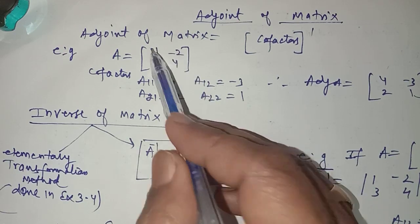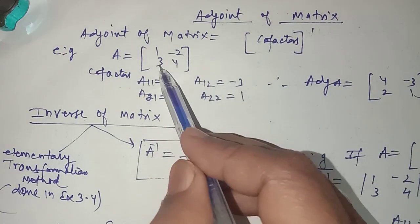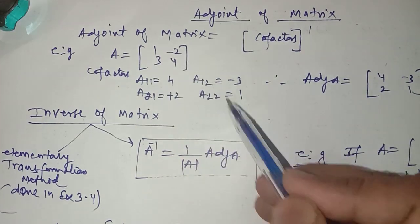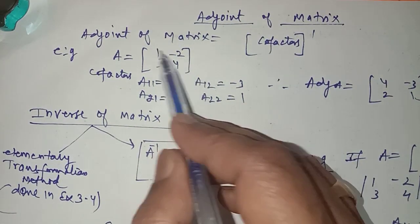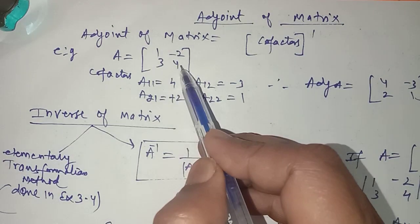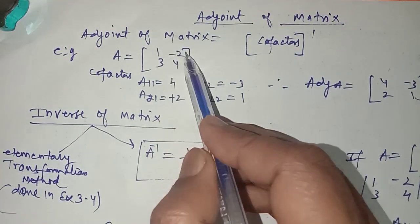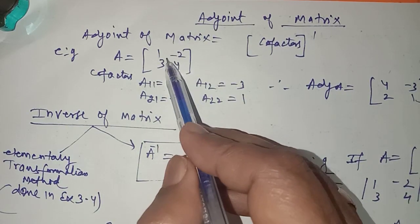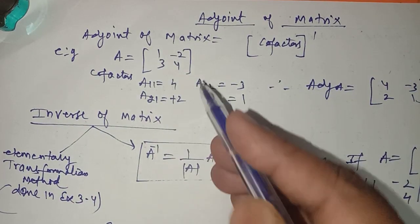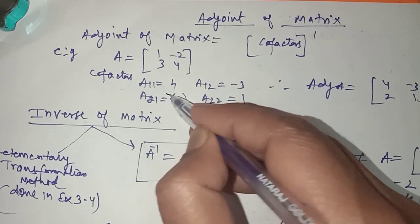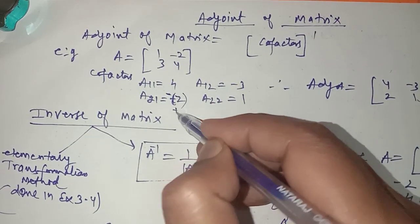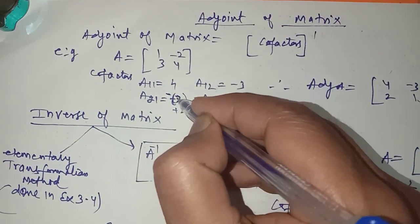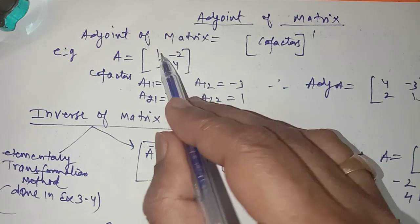This cofactor is positive, this cofactor is negative, this cofactor is negative, and this cofactor is positive. So deleting the corresponding row or column: A11 = 4, A12 = -3 (with the minus sign), A21 = minus(-2) = 2, and A22 = 1.